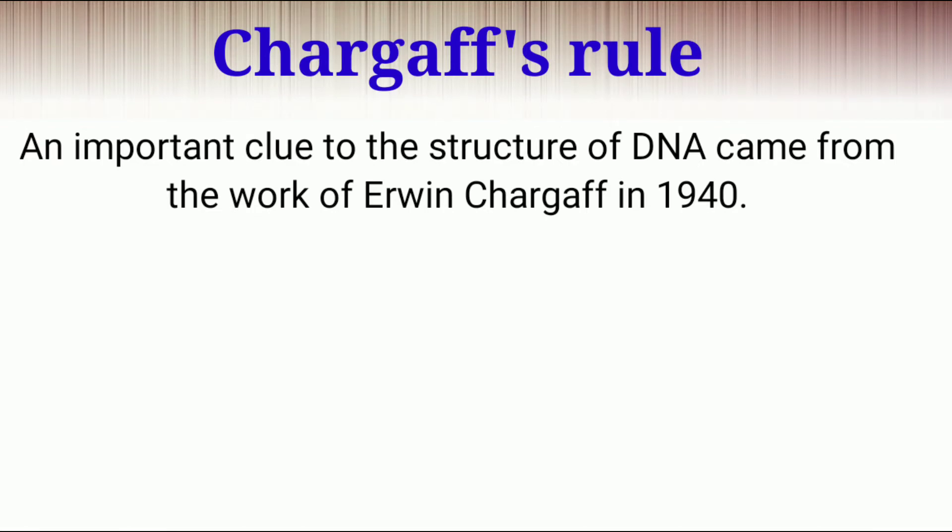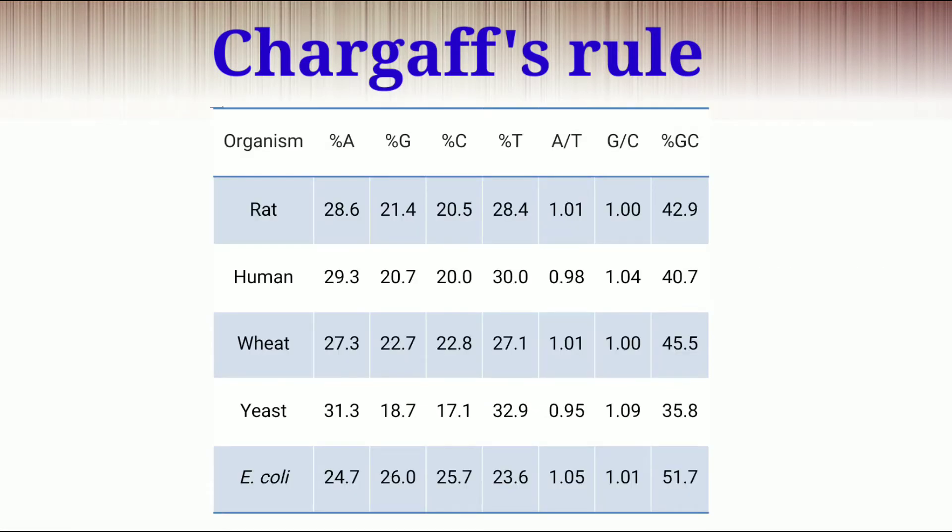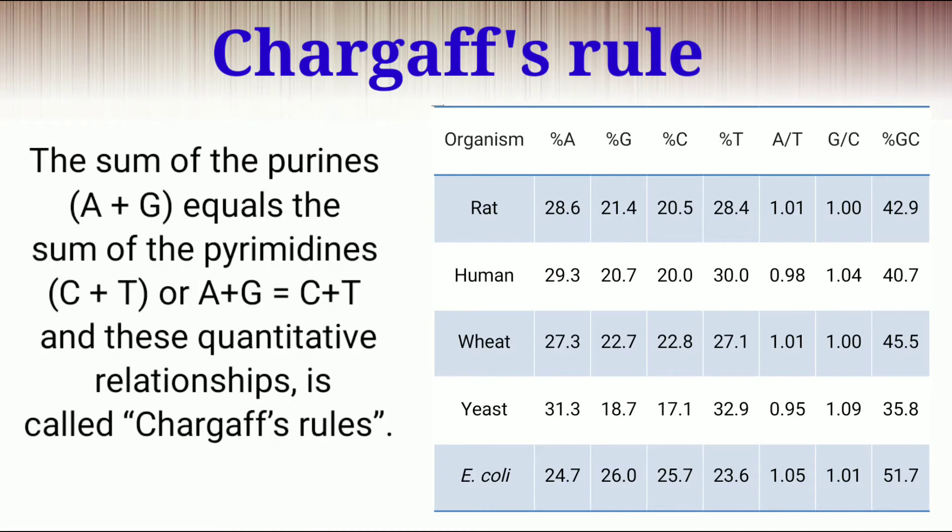In 1940, Erwin Chargaff found that all four bases are not arranged randomly in the DNA. Rather, he found a particular pattern and it's called Chargaff's rule. He analyzed genetic material of various organisms and found that base composition is unique for a particular organism. But there is a correlation between the percentage of adenosine and thymine and guanosine and cytosine. He found that adenosine is always equals to thymine and guanosine is always equals to cytosine in all organisms, and the total amount of purine is equal to pyrimidine.